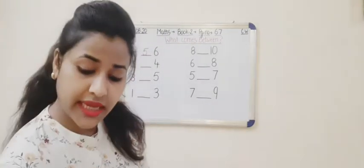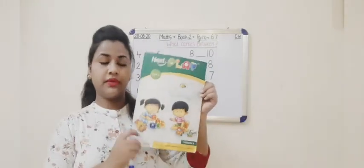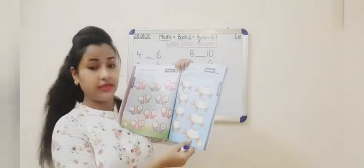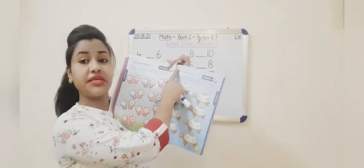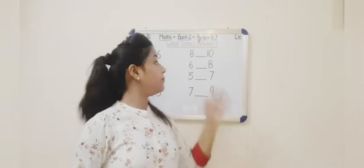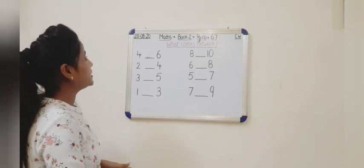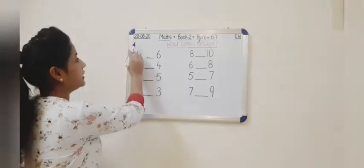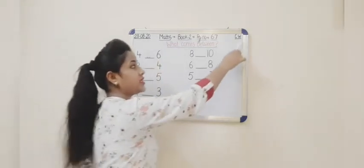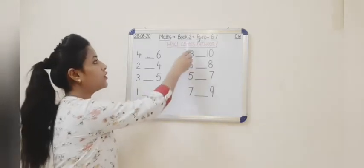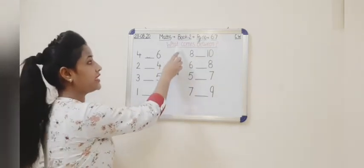So for that you have to open Book 2, and in Book 2 you have to open page number 67. What comes between? Okay students, here you have to mention today's date and classwork. Now please have a look at the board. Today's date is 28th, the month is August, and the year is 2020. You have to mention classwork, and the concept is what comes between.